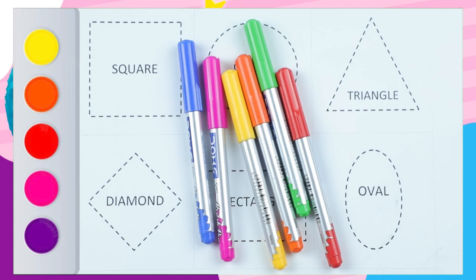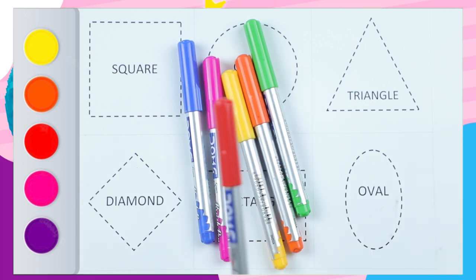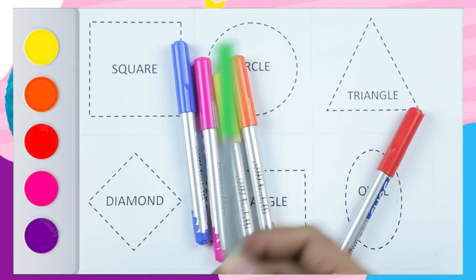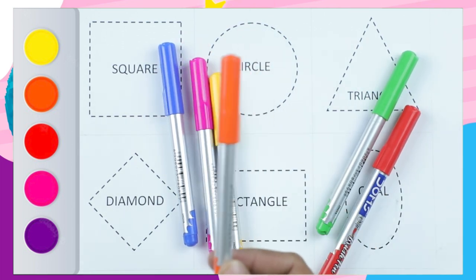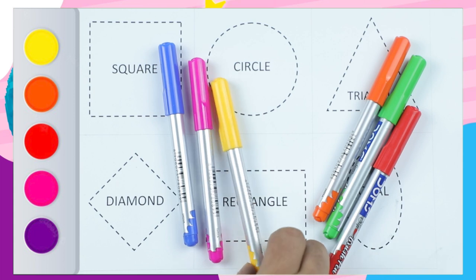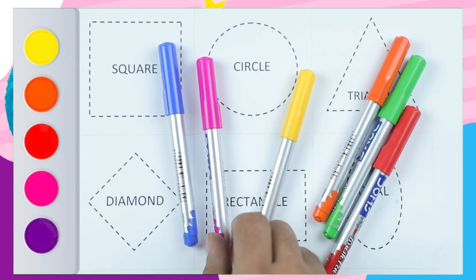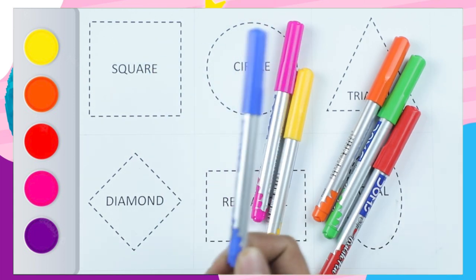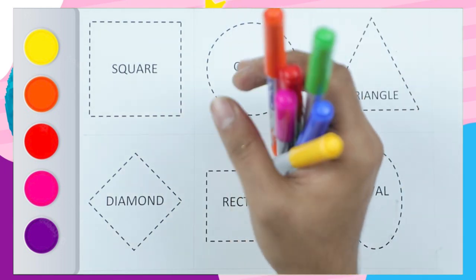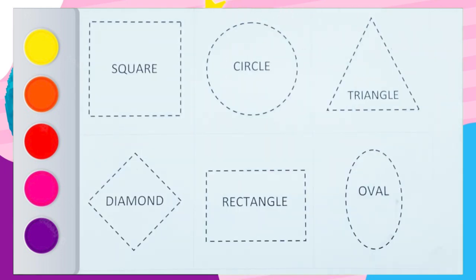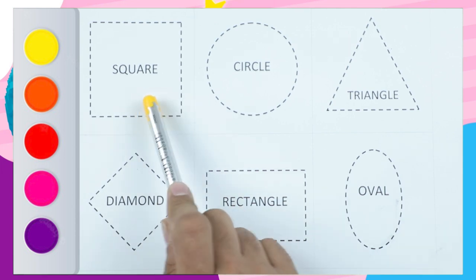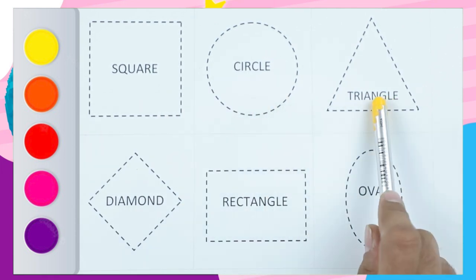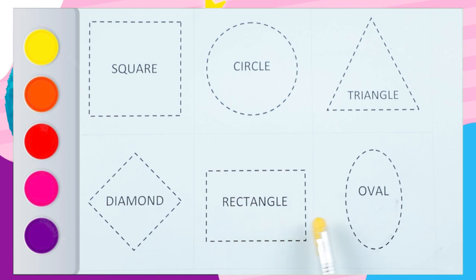Hello friends, how are you? Today we learn shapes with some colors: red color, green color, orange color, yellow color, pink color, blue color. Which shape is this? This is square, circle, triangle, diamond, rectangle, and oval. So let's draw!